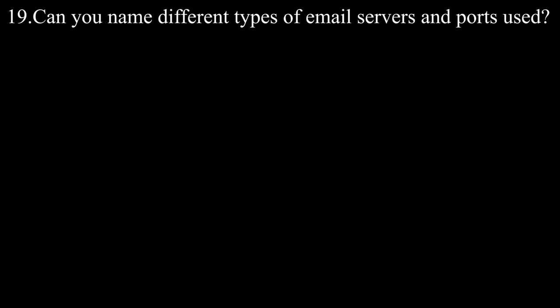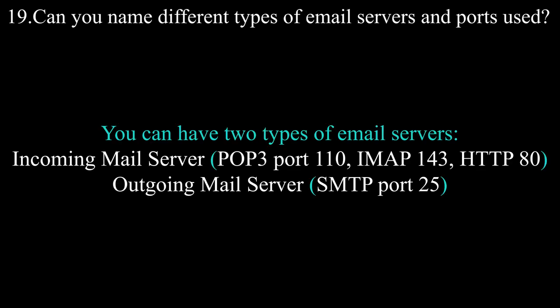Question number nineteen: can you name different types of email servers and ports used? You can have two types of email servers. Incoming mail servers, which are POP3 on port 110, IMAP on port 143, and HTTP on port 80. Outgoing mail server is SMTP on port 25.